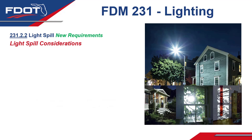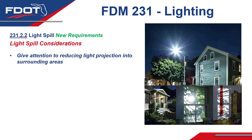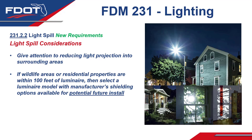Next, at the request of the districts, we have a new Section 231.2.2 for light spill. The first statement is to give attention to reducing light projection into surrounding areas. If light is projected into nearby living spaces or through nearby windows, that'd be considered light trespass, which should be avoided wherever possible. The first objective requirement states that if wildlife areas or residential properties are within 100 feet of the luminaire, then select the luminaire model with the manufacturer's shielding options available for potential future installation. When within that 100-foot threshold, light shielding is not automatically required, but you want to make sure options are available from the manufacturer should any issues arise.